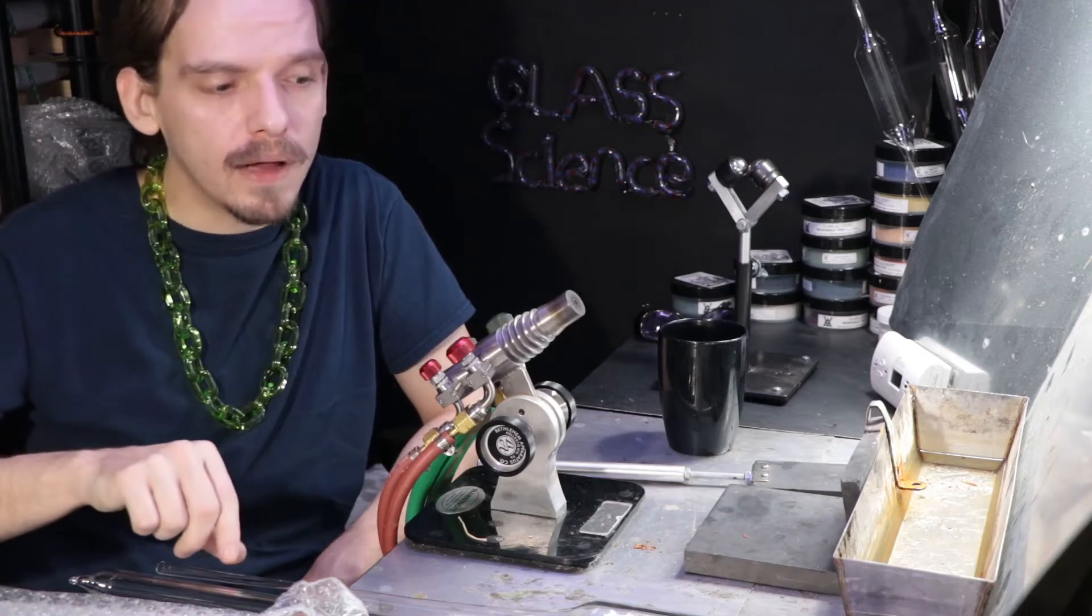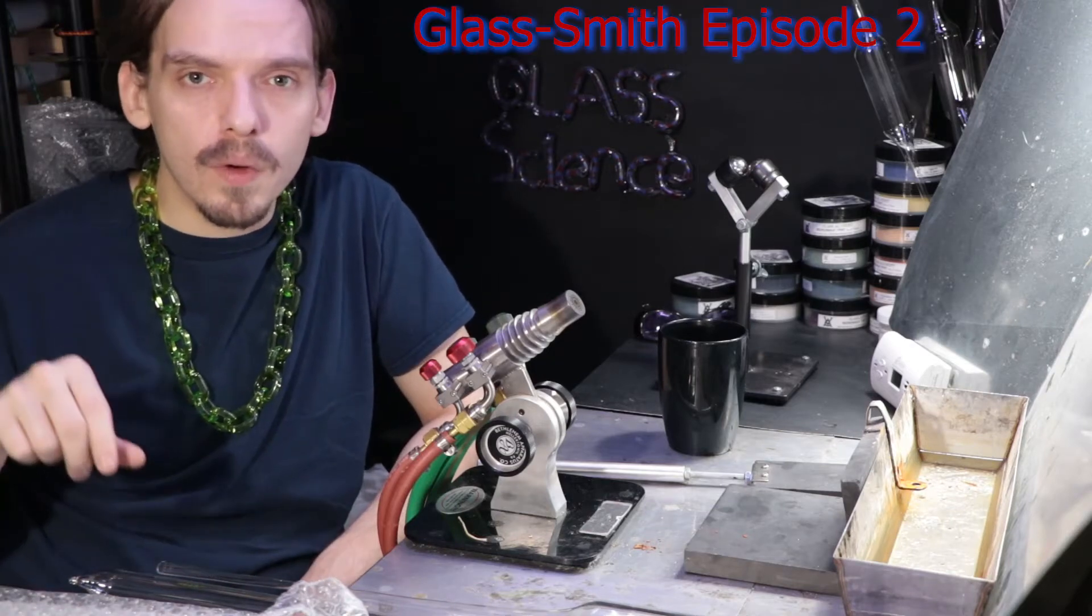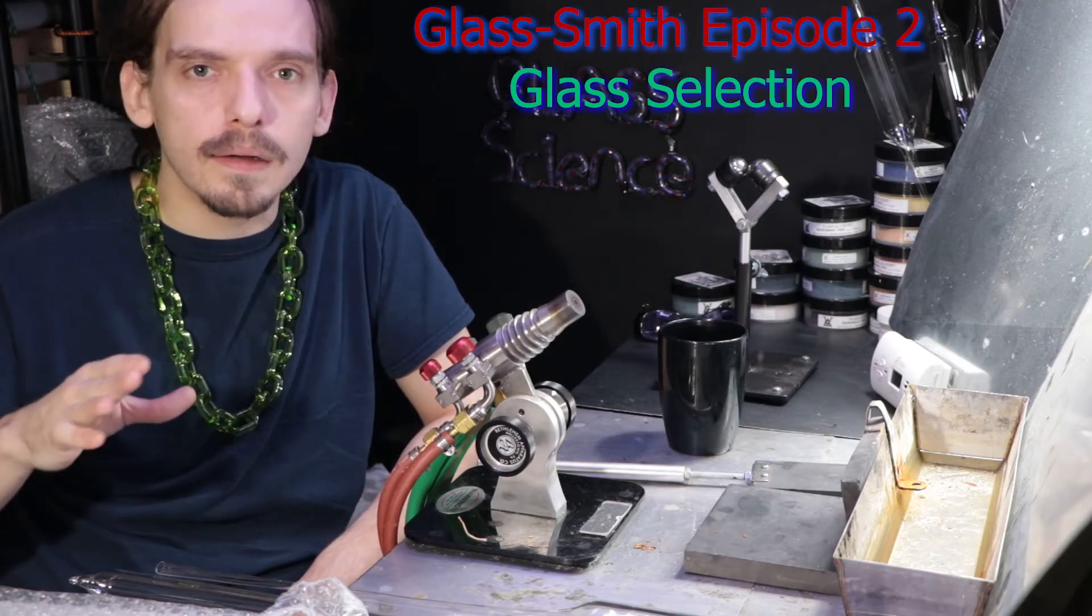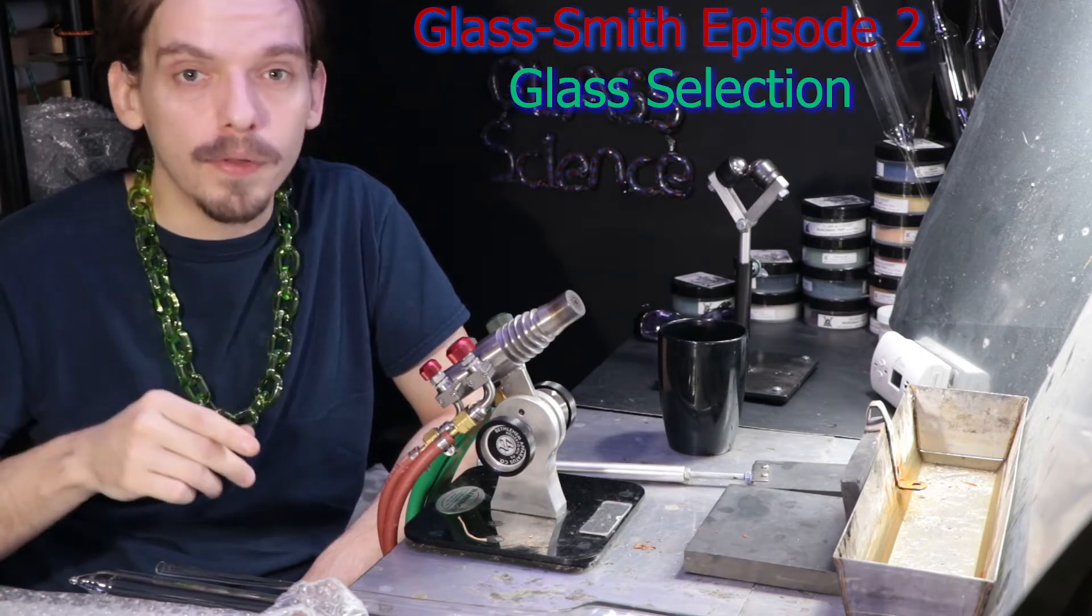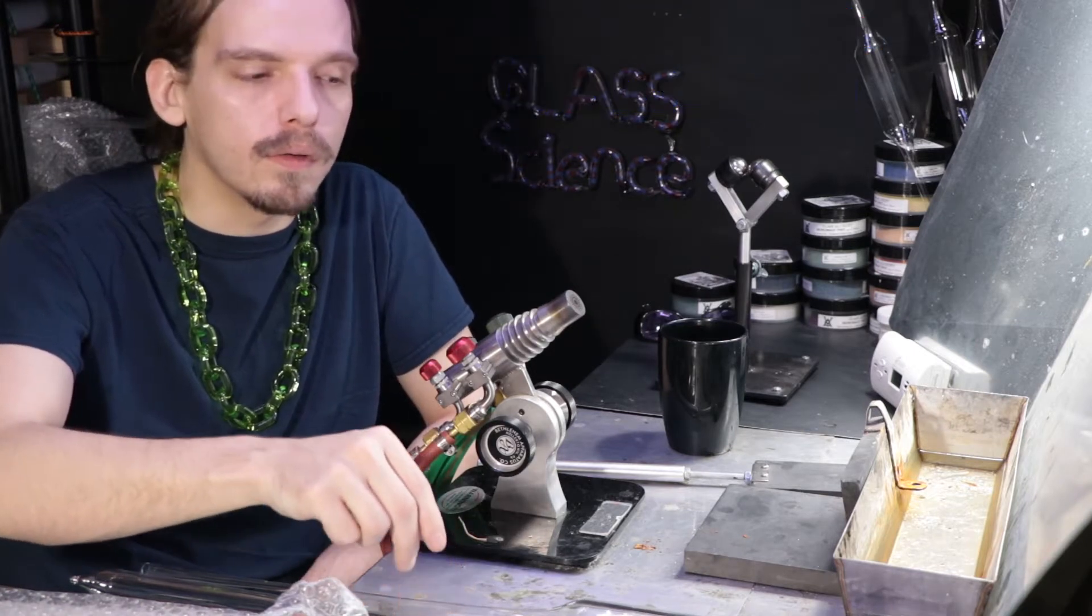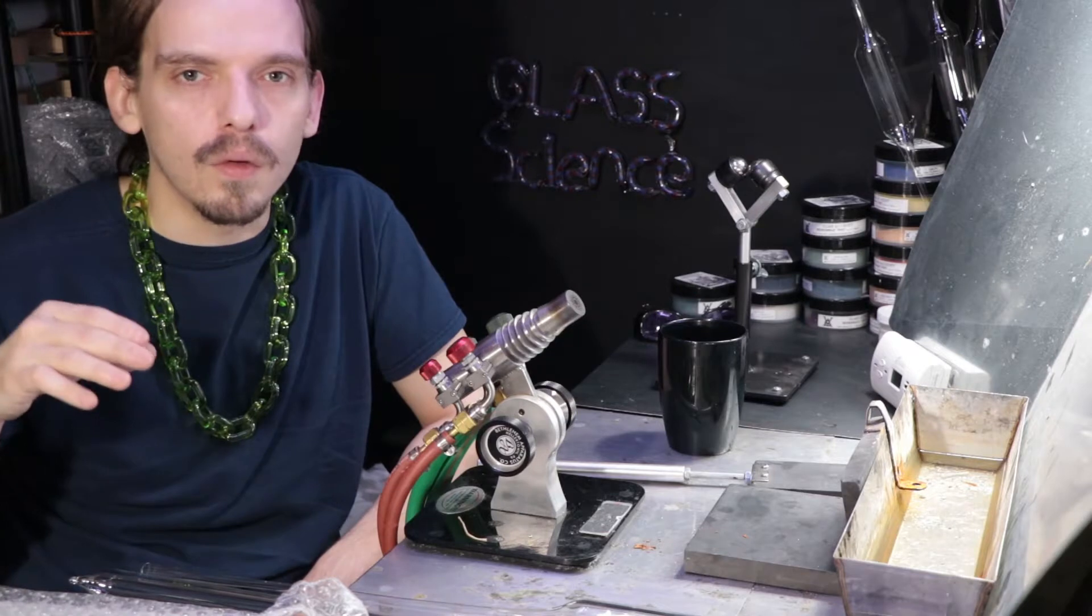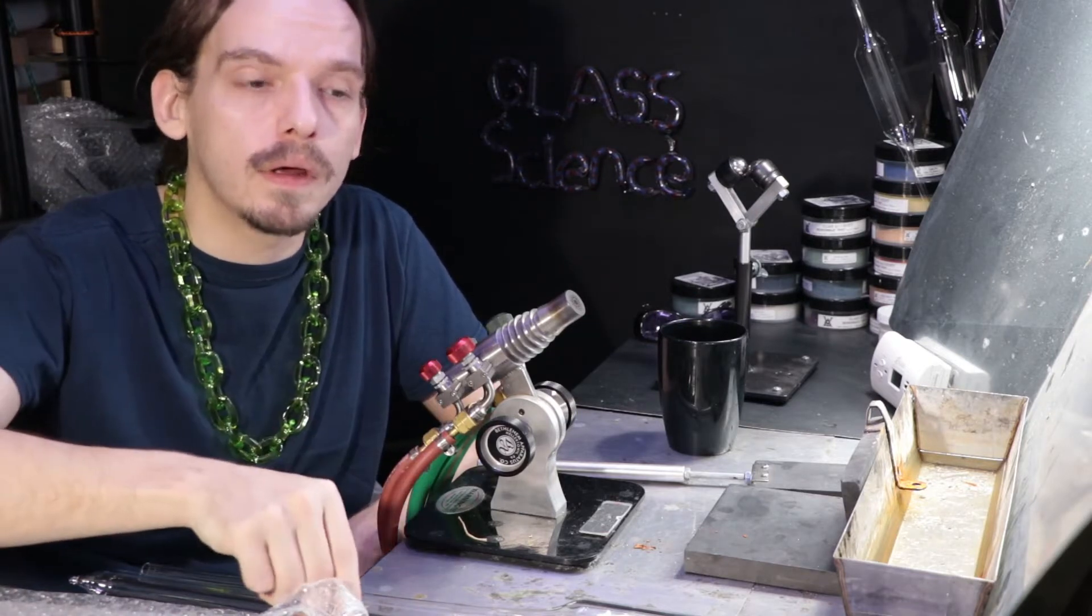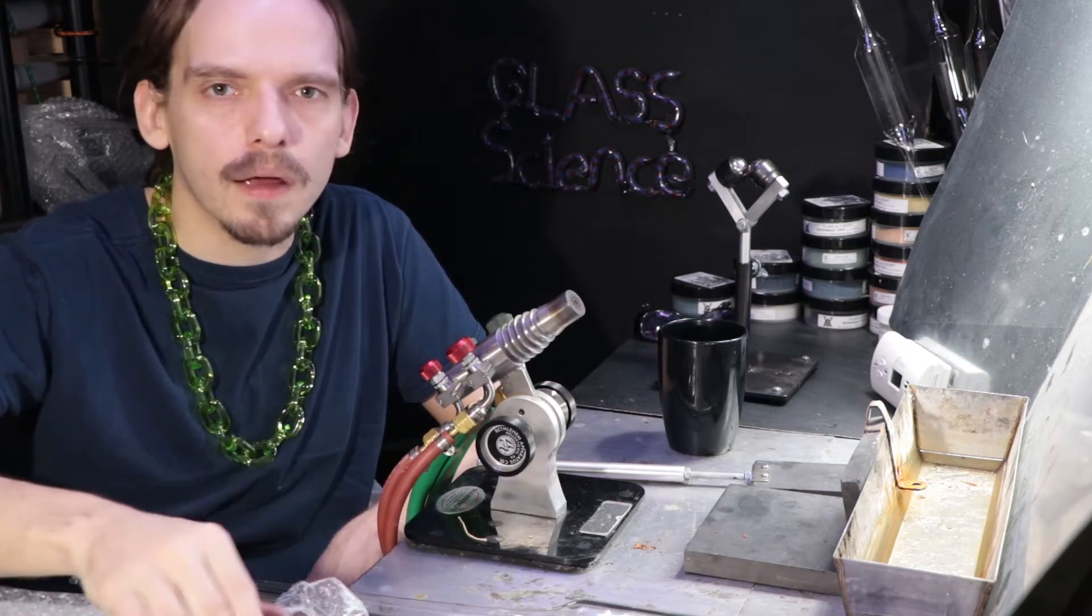Matt Yasa here, another episode of GlassSmith. Now one question that comes around a lot is what tube or rod diameter and wall thickness to get. There's a lot of varieties out there, so this is just going to go over the basics of what to get to begin with. This is going to focus mainly on borosilicate, so not really soft glass here.